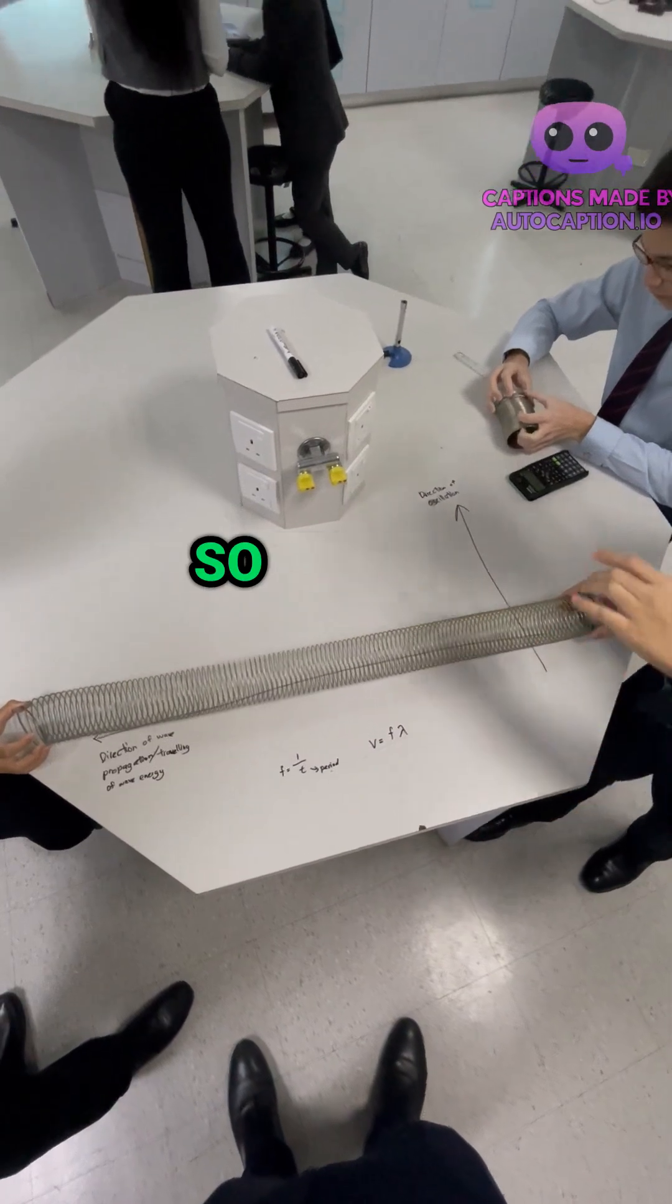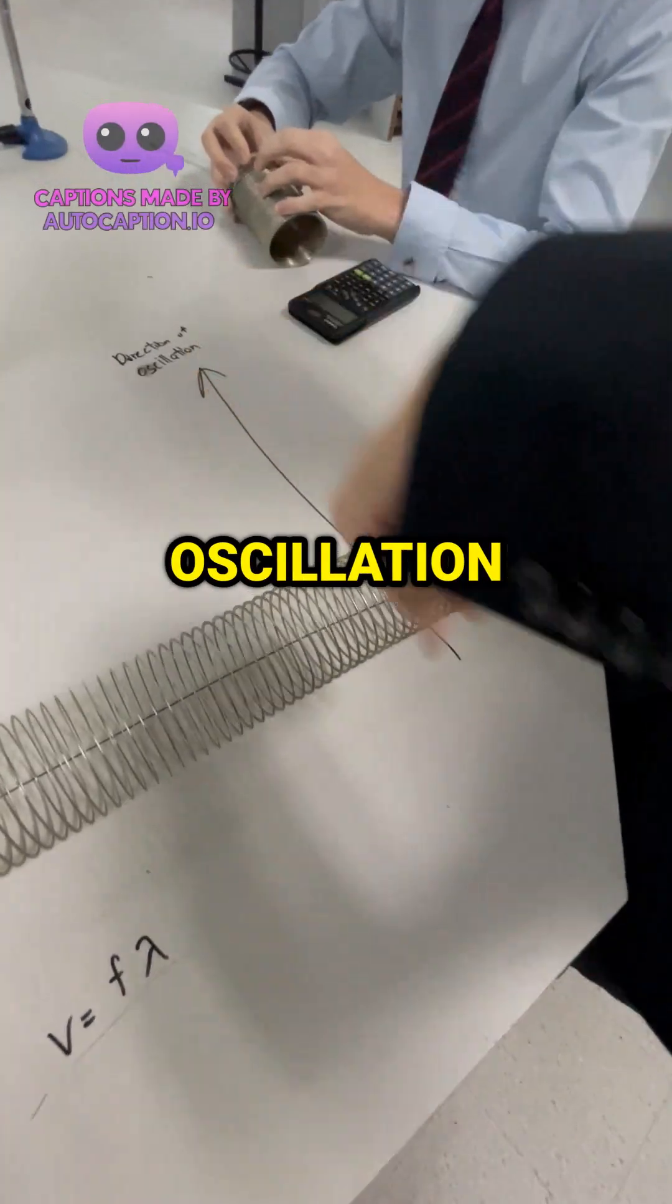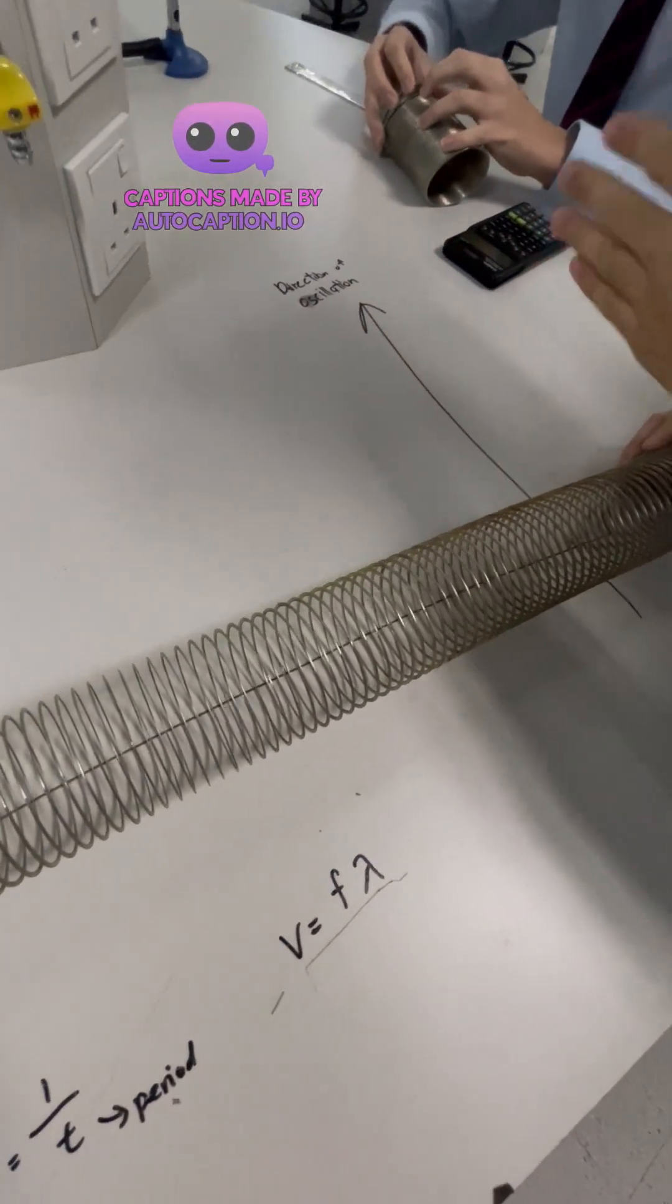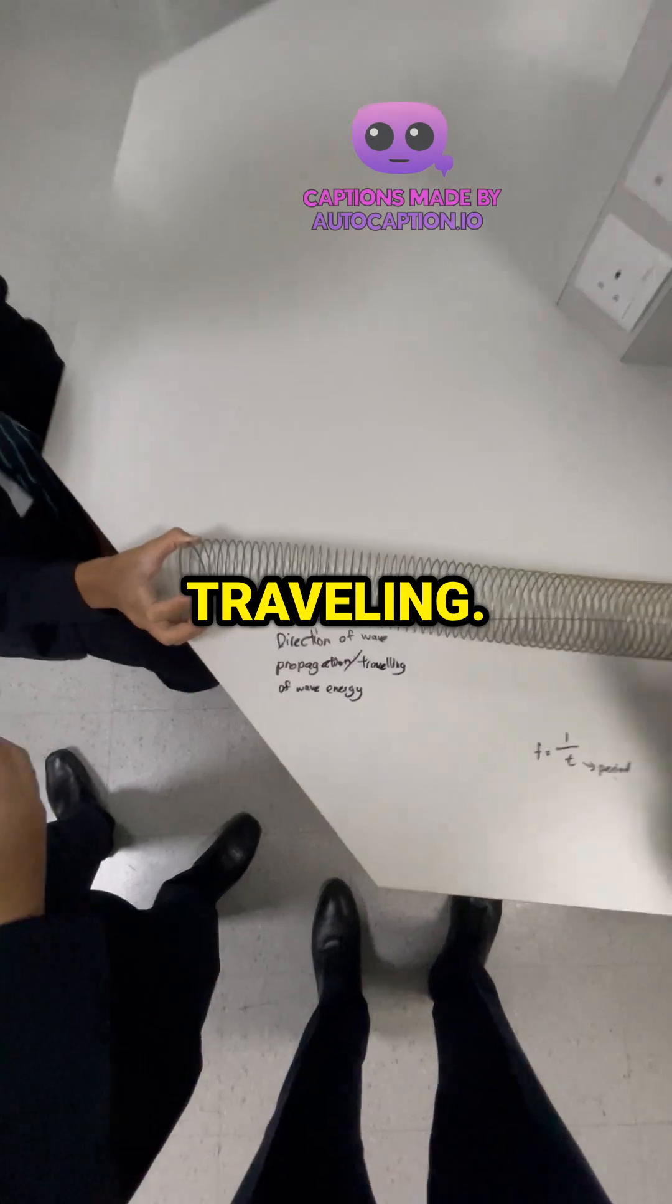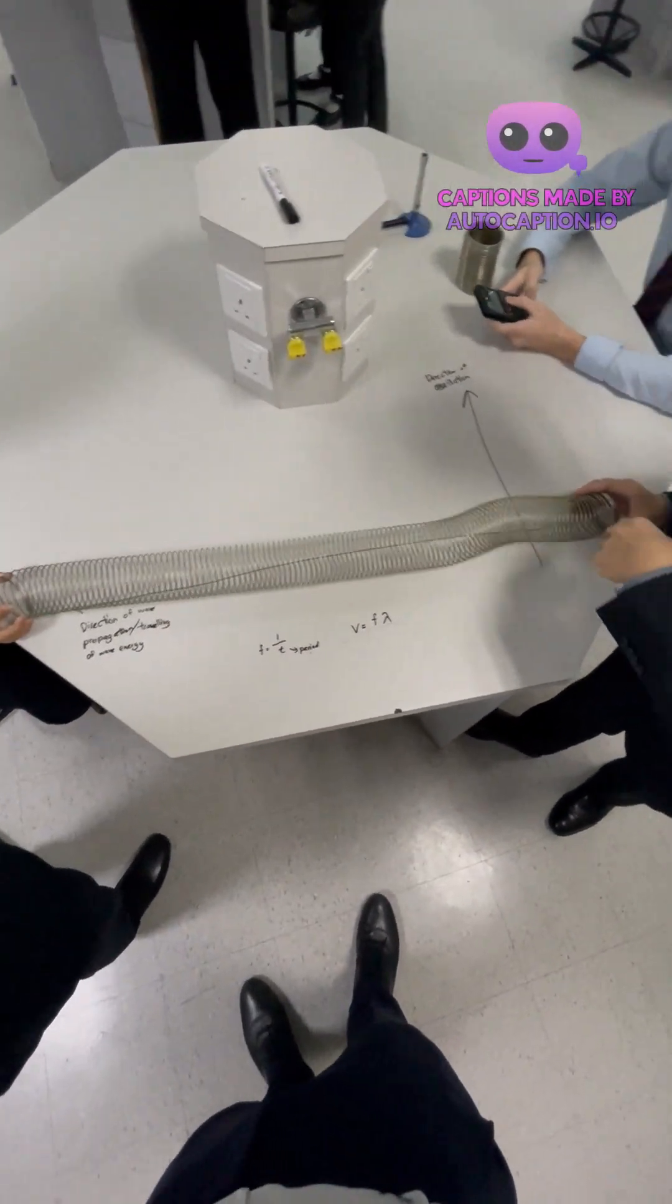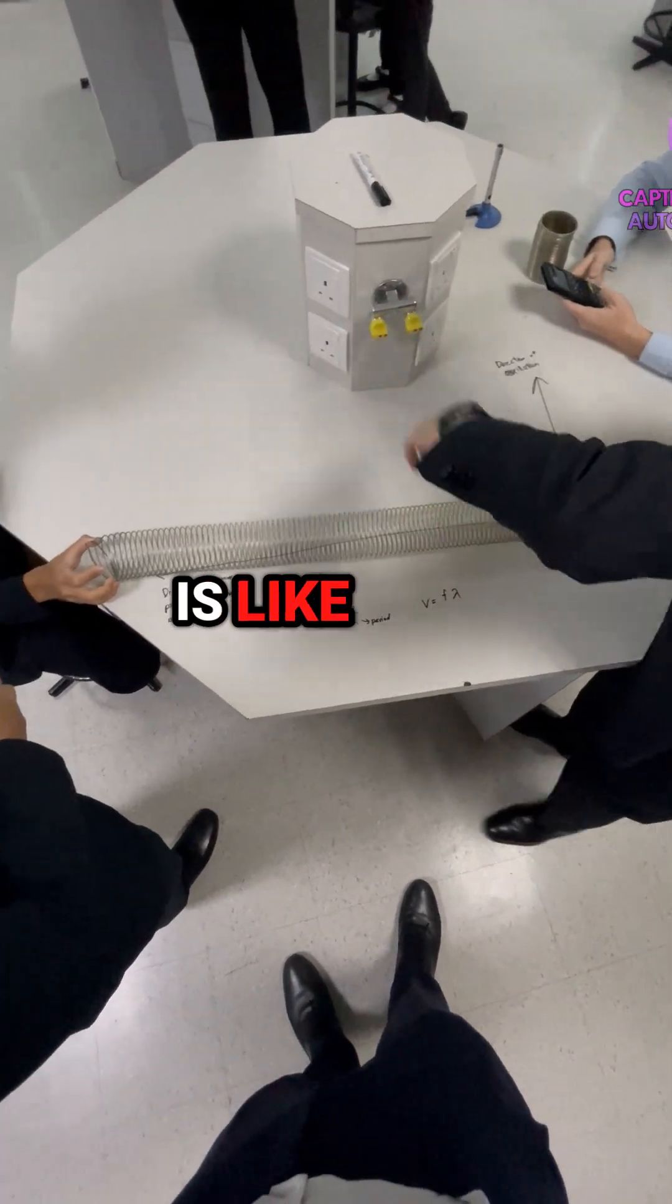So that is the transverse wave. You can see that the oscillation is perpendicular to the direction where the wave is traveling. So let's do it again. See, the wave travels this way, but the oscillation is like this.